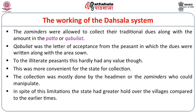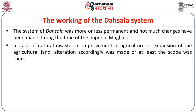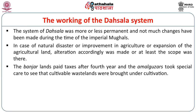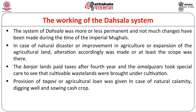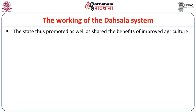In spite of this limitation, the state had a greater hold over villages compared to earlier times. The Dasala system was more or less permanent and not much change was done during the time of the imperial Mughals. In case of natural disaster or improvement in agriculture or expansion of agricultural land, alterations were made or at least the scope was there. The banjar lands paid taxes after the fourth year and the Amal Guzars took special care to see that cultivable wastelands were brought under cultivation. Provision of taqavi or agricultural loan was given in case of natural calamities or for digging wells or canals and sowing of cash crops. The state thus promoted and shared the benefits of improved agriculture.